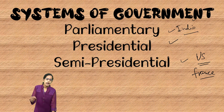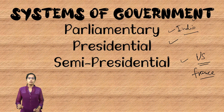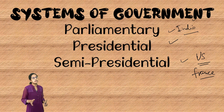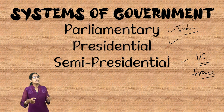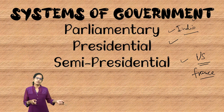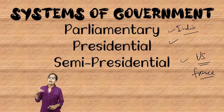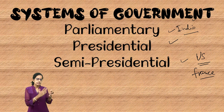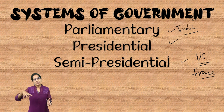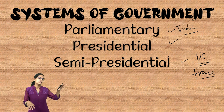Japan has a parliamentary form of government where the emperor is the head of state and the prime minister is the head of government. Similarly, Italy has a parliamentary form where the president is the formal head of state, but the prime minister is the head of government.